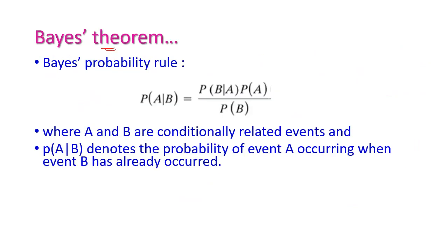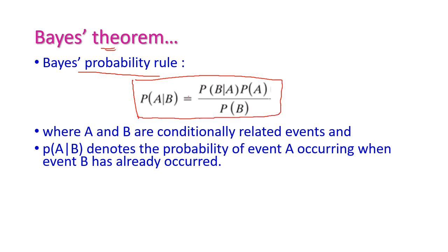Now let us see what is Bayes theorem — that is, Bayes' probability rule. Bayes' probability rule is: P(A|B) is equal to P(B|A) times P(A) divided by P(B). This is Bayes' theorem. Here, the events A and B are conditionally related events. P(A|B) denotes the probability of event A occurring when event B has already occurred.